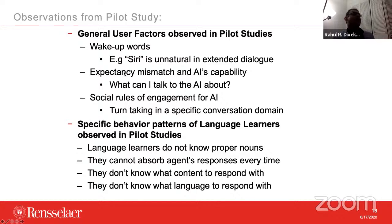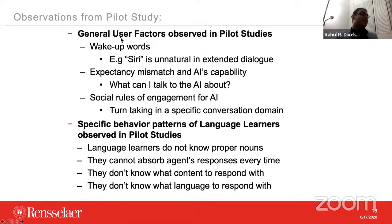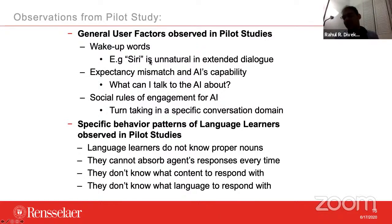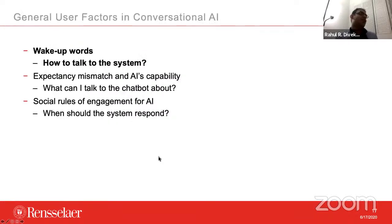The first category is something you and I will experience with AI agents, and the second category is specific to learning a foreign language with an AI agent. The first thing under general user factors is wake-up words: how do you talk to the system?